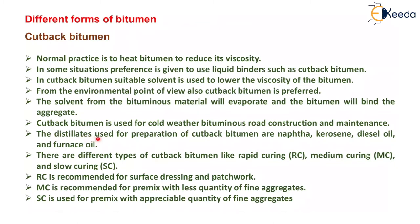The distillates used for preparation of cutback bitumen are naphtha, kerosene, diesel oil, and furnace oil. There are different types of cutback bitumen: rapid curing, medium curing, and slow curing. Rapid curing is recommended for surface dressing and patchwork. Medium curing is recommended for premix with less quantity of fine aggregates, and slow curing is used for premix with an appreciable quantity of fine aggregates.